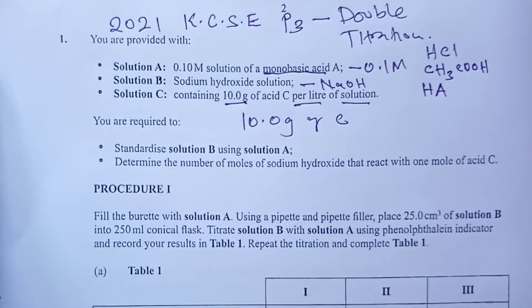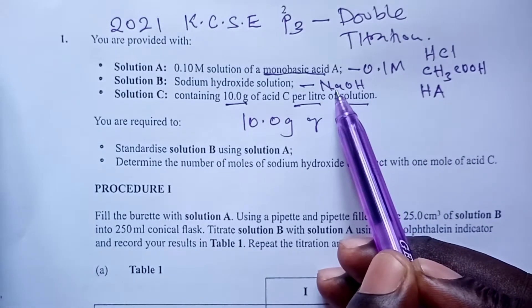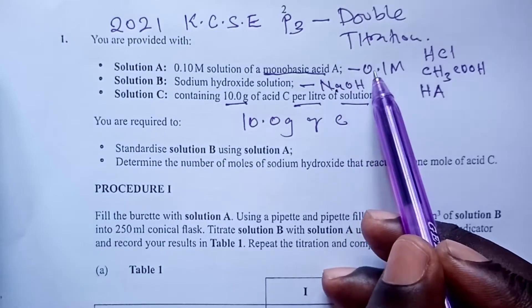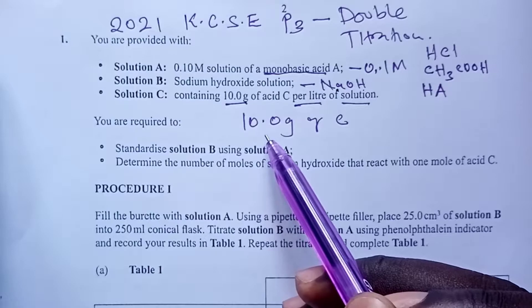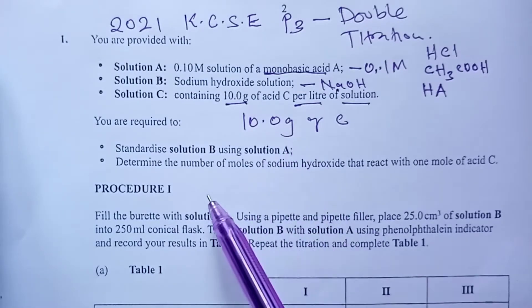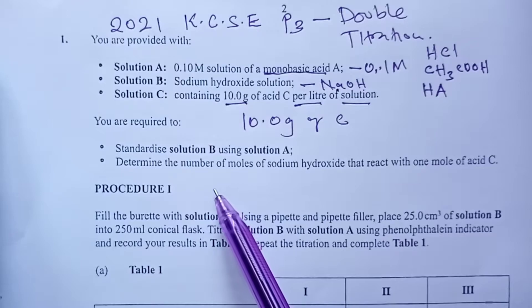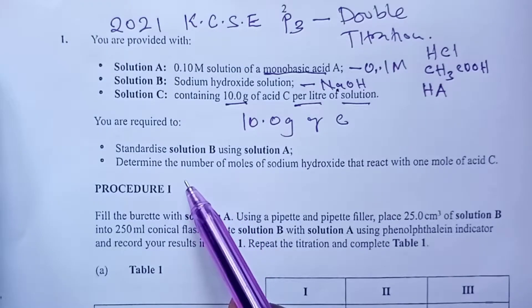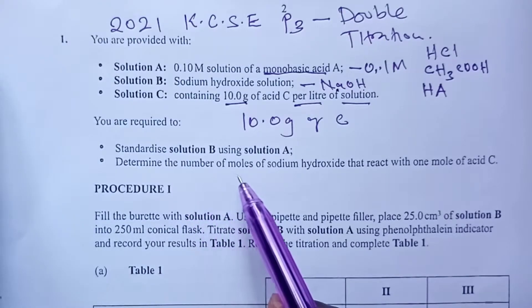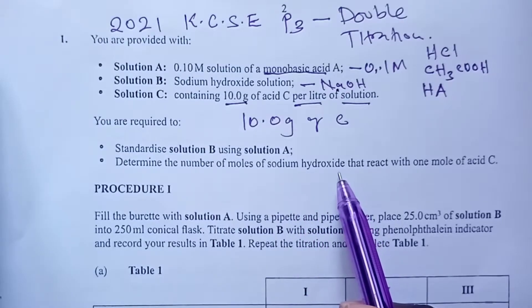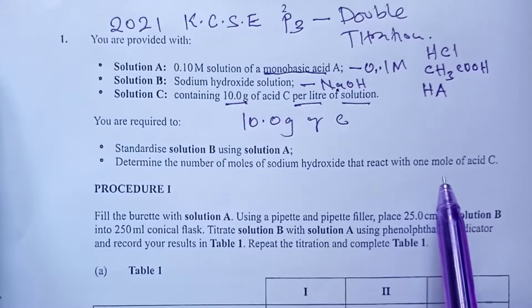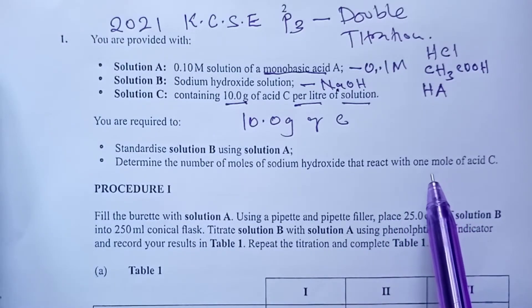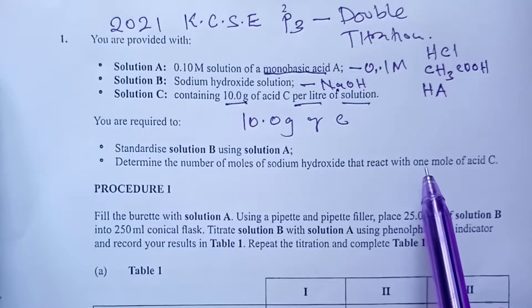So let us move on to what you are required to do in the practical. So number one, we want to standardize solution B, this sodium hydroxide, using A. And standardization simply means we want to find its concentration. And then two, we were tasked to determine the number of moles of sodium hydroxide solution after standardization that would react with one mole of acid C. Now, to the procedure.